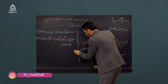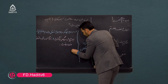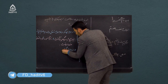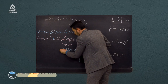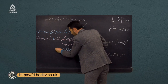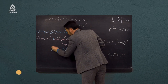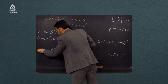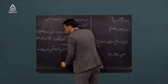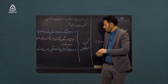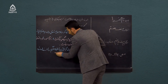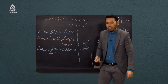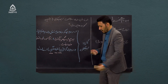کاربرد دوم کجاست؟ در عباراتی که از کلماتی مانند زیرا، اما، اگرچه استفاده شده باشد. هر زمانی که این کلمات را داشتیم، باید از سیمی کلن استفاده کنید. یک مثال می زنیم که این عبارت برای شما روشن تر شود.